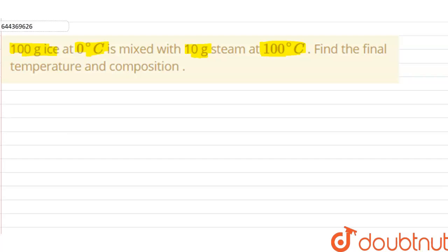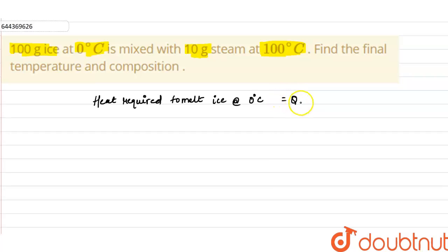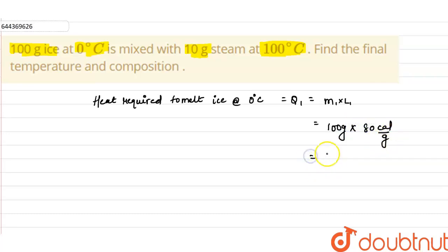First, let us find the heat required to melt 100 grams of ice at 0°C. This is Q1 = mass × latent heat = 100 grams × 80 cal/g = 8000 calories. This is the heat required to completely melt the 100 grams of ice.